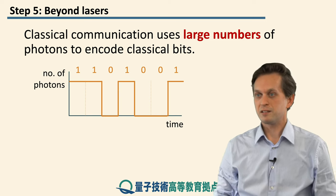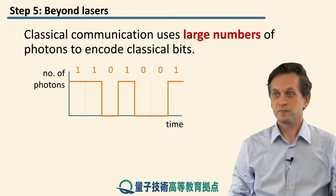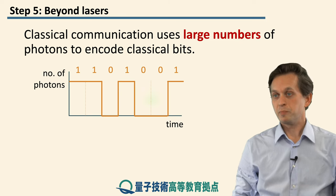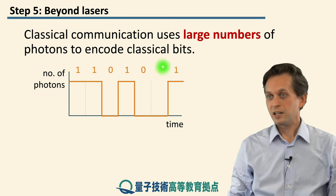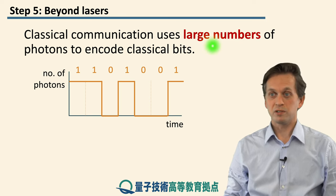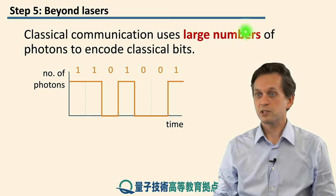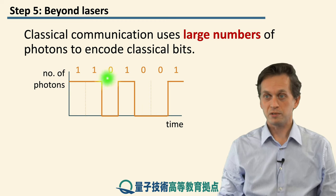Such light is very useful in classical communication. In particular, in order to encode zeros and ones — in order to encode classical bits — it uses large numbers of photons.